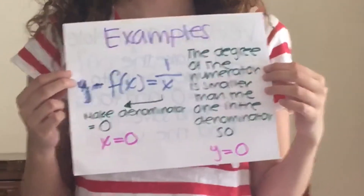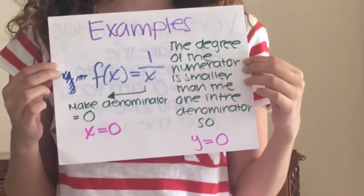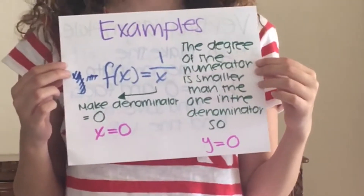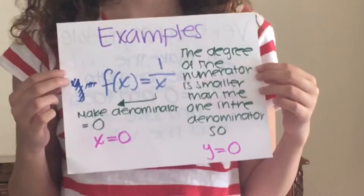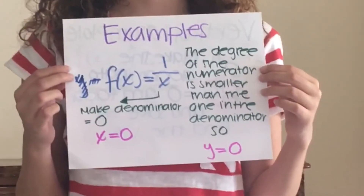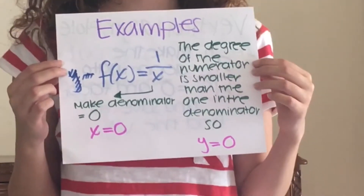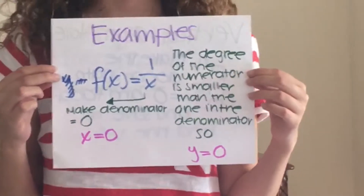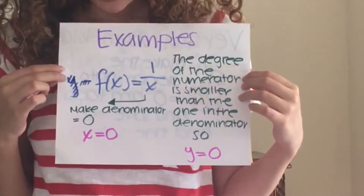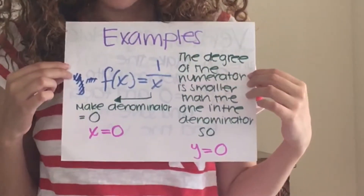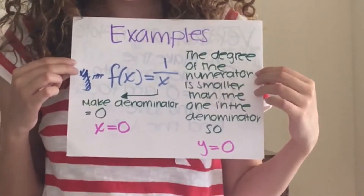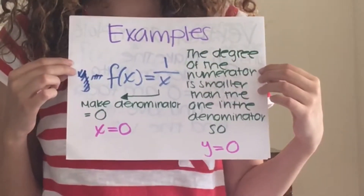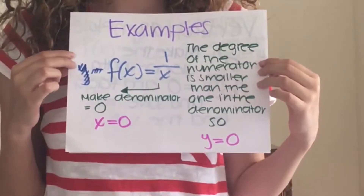Example: f(x) is equal to one over x. The degree of the numerator is smaller than the degree of the denominator, so y is equal to zero, meaning the horizontal asymptote is at zero, or the x-axis. And make the denominator equal to zero to find the vertical asymptote, so x is equal to zero.